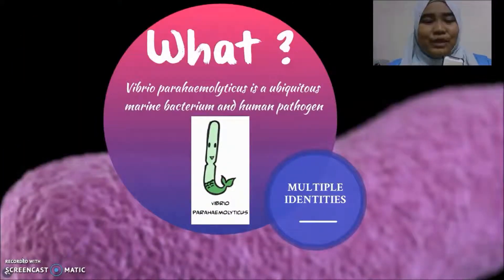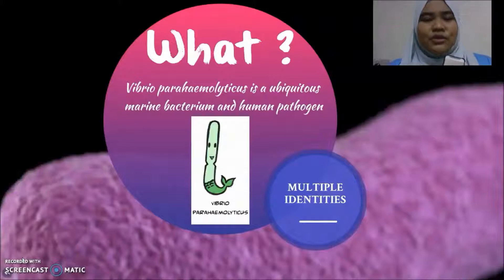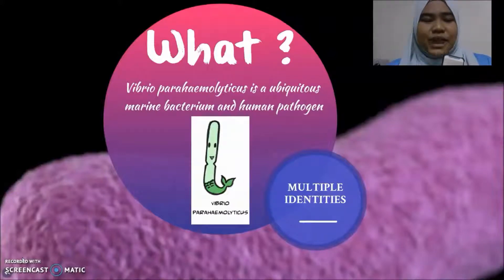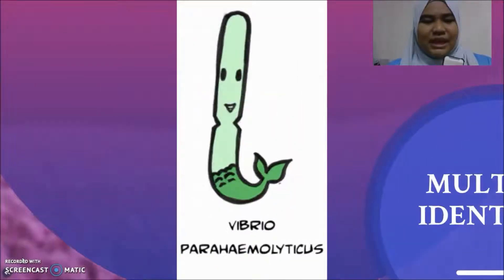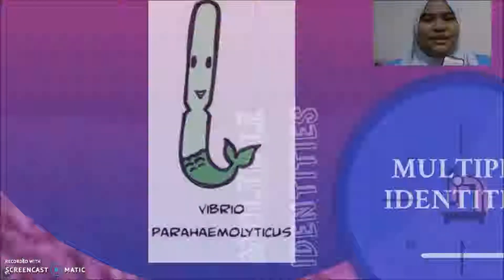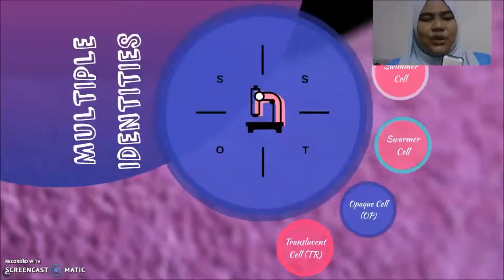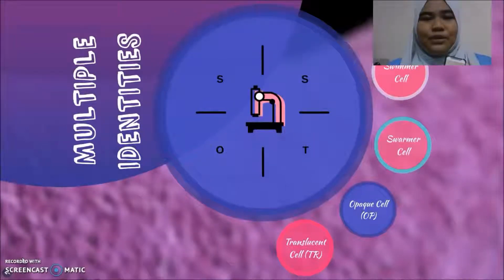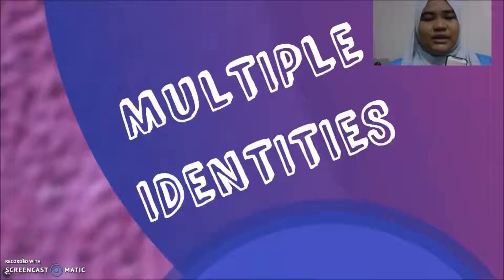So, what is Vibrio parahaemolyticus? Vibrio parahaemolyticus is a ubiquitous marine bacterium and human pathogen. Vibrio parahaemolyticus has multiple identities.